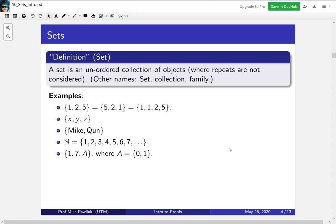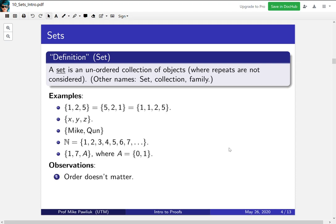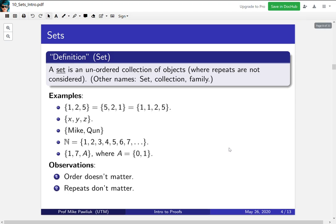But a couple observations before we continue. The order doesn't matter in a set. So that's one of the main reasons how a set is distinguished from a list. So in a list, the order matters. In a set, the order doesn't matter.